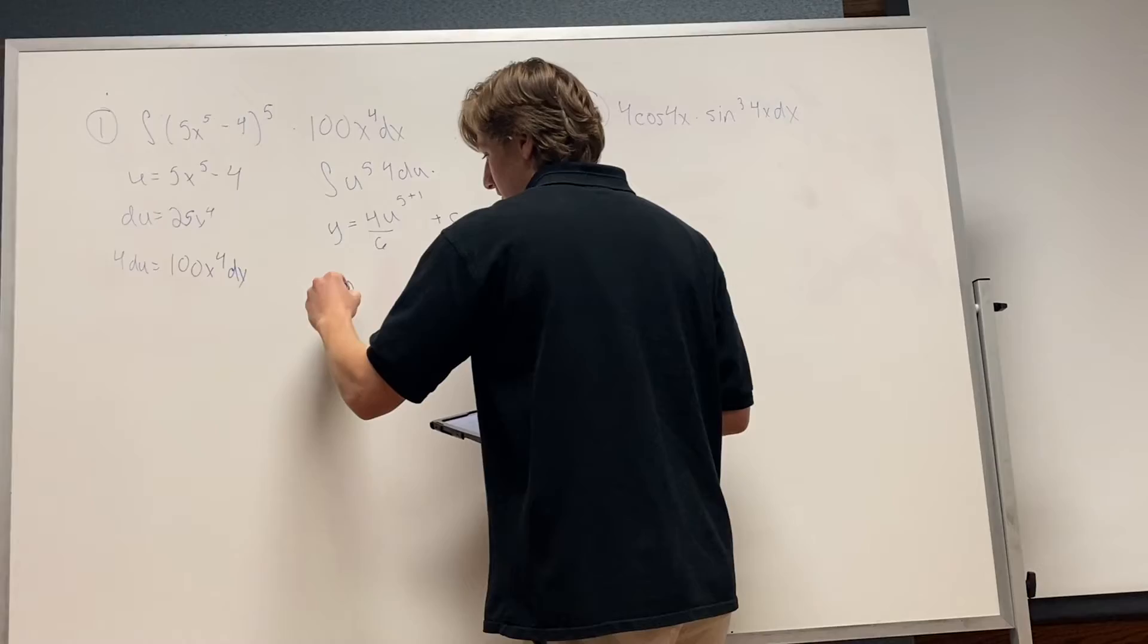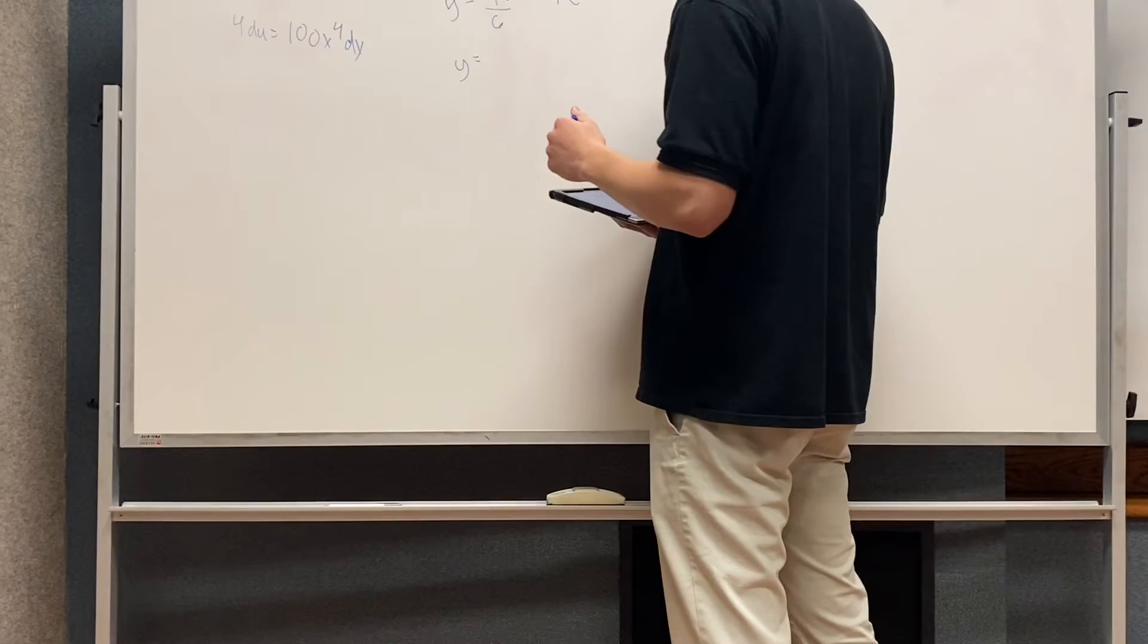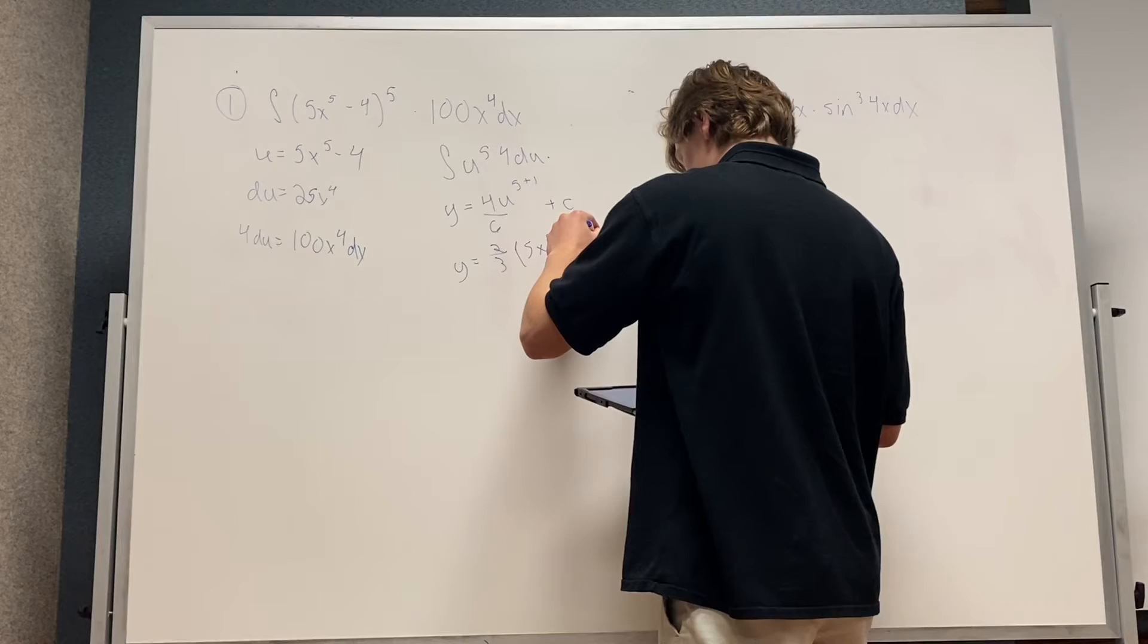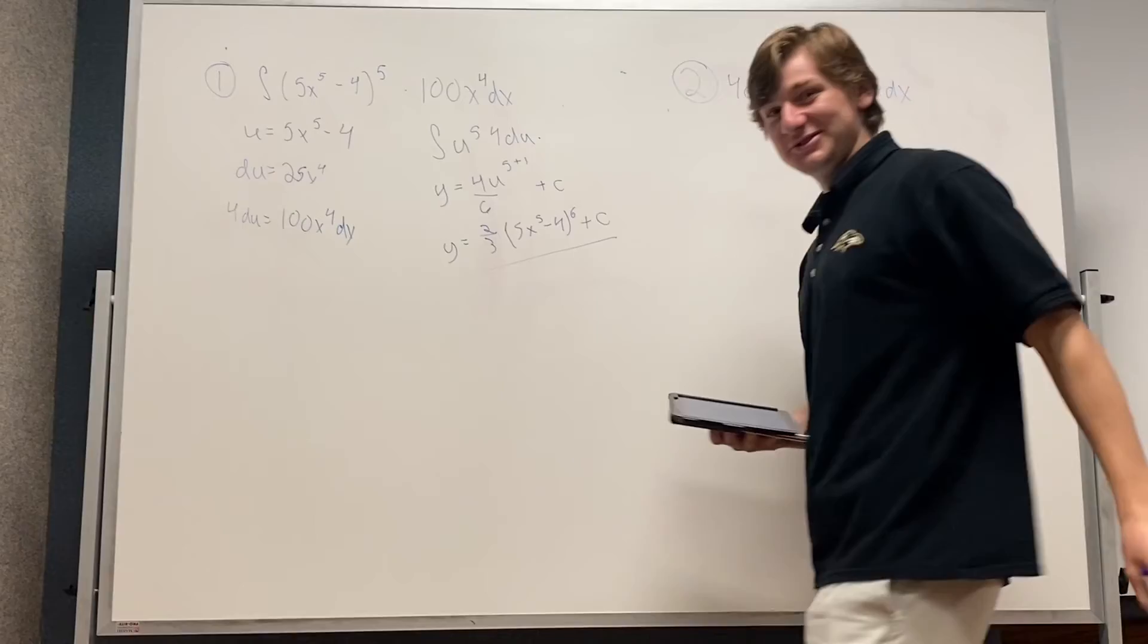And then to simplify, it would be y equals 2 thirds, and then in parentheses, 5x to the 5th minus 4 to the 6th power, plus c. Very good, you are one smart student. I've been studying a lot.